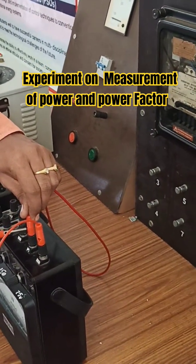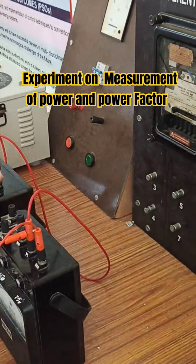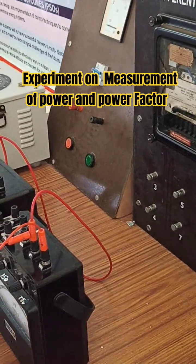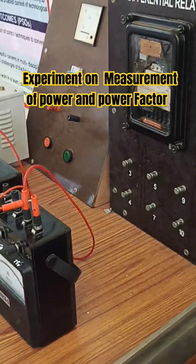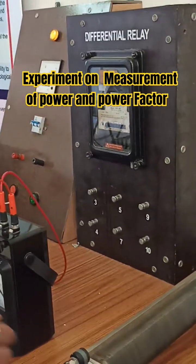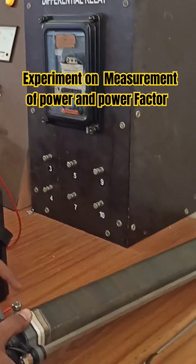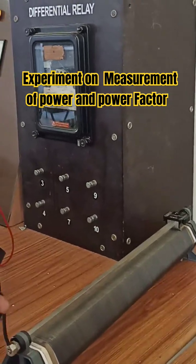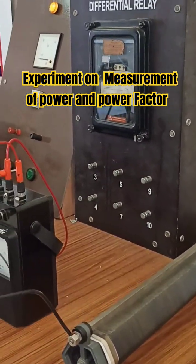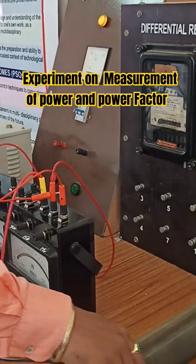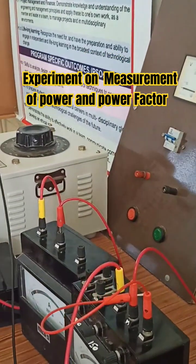From L it has to go to the load. This L is connected to the rheostat. This is the input of the rheostat and this is the output of the rheostat. I am going to close this, making a closed path.